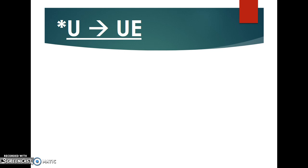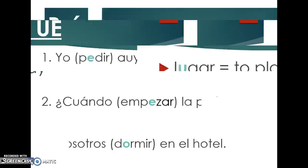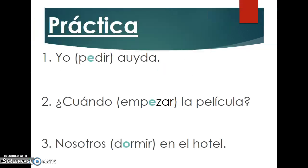The last category, U to UE, is not very common but will show up. As mentioned, 'jugar' is the most common verb in that category, and we have already done plenty of practice with it.